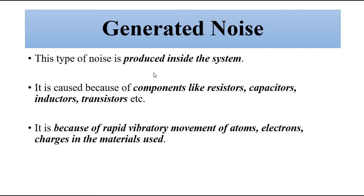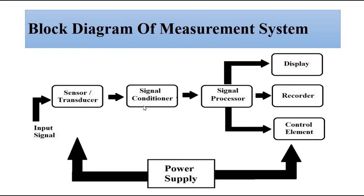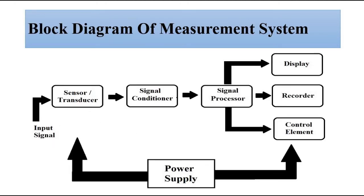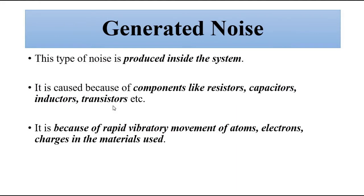Generated noise is produced inside the measurement system. The subsystems and blocks involved in the measurement system are the source of generated noise. This arises because of the components involved — like resistors, capacitors, inductors, and transistors — the elements used in the design of these subsystems. It is caused by the vibratory movement of electrons and atoms.